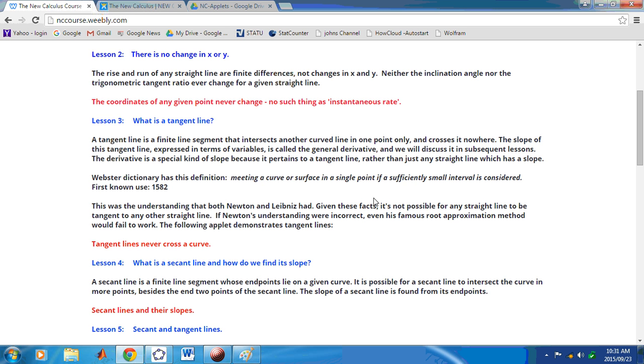Webster's Dictionary has this definition: A tangent line is one that can be described by meeting a curve or surface in a single point if a sufficiently small interval is considered. And the first known use is 1582.